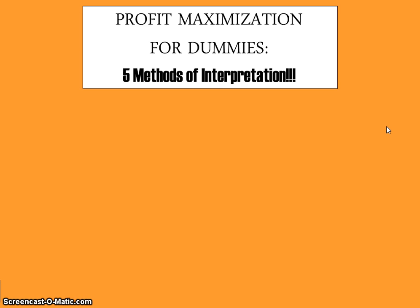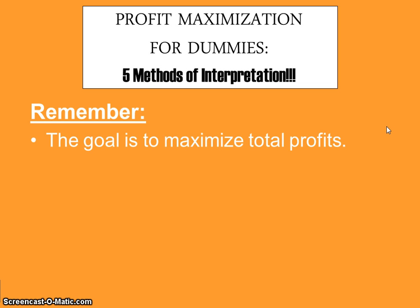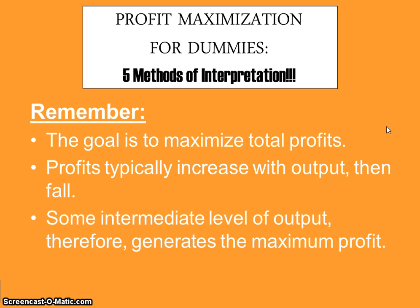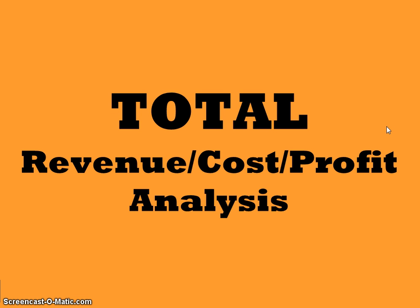In your practice problem packet, there's a sheet you can use to follow along as we describe the five ways you can interpret your profit-maximizing level of output. Keep in mind that the goal is to maximize total profits. Profits typically increase with output and then fall, so some intermediate level of output generates the maximum profit.